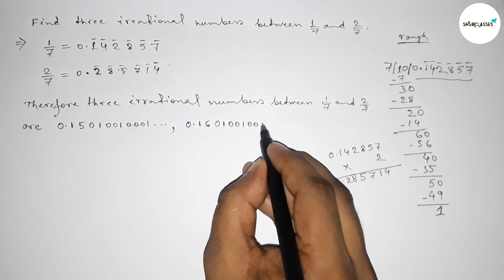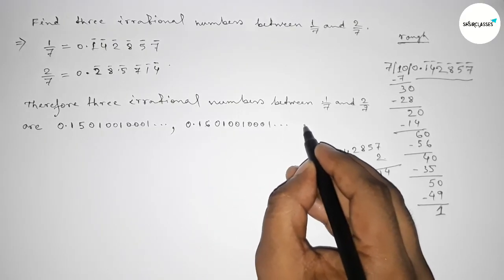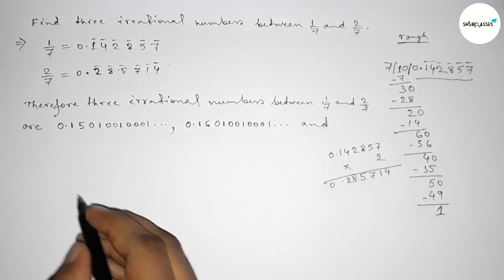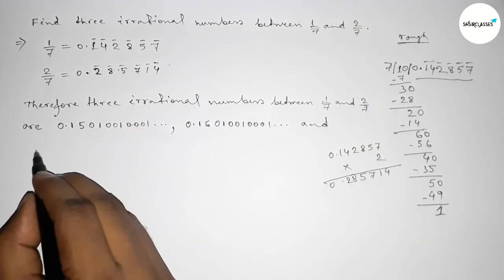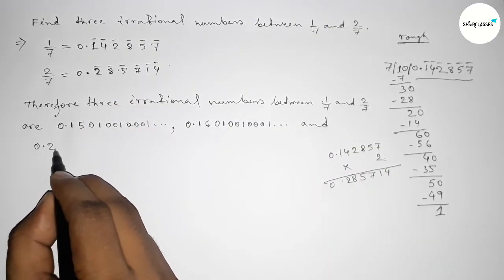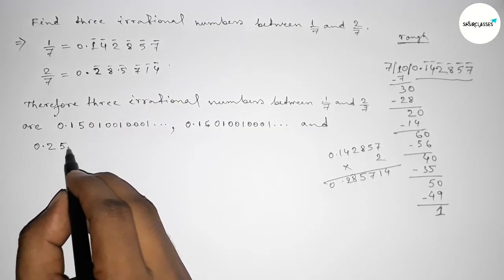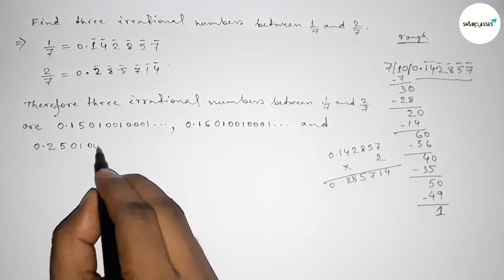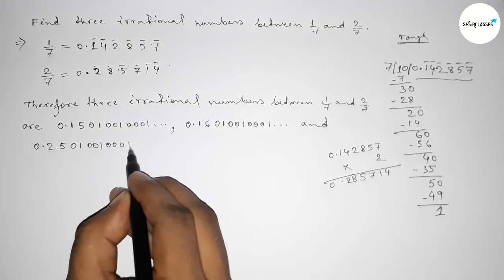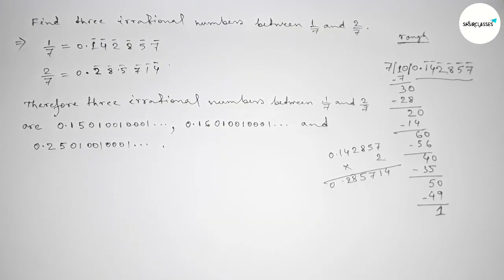And the third irrational number, taking 0.2 and taking less than 8, so 5. Similarly, this is also the third irrational number. So that's all. Thanks for watching. If this video is helpful to you, then please share it.